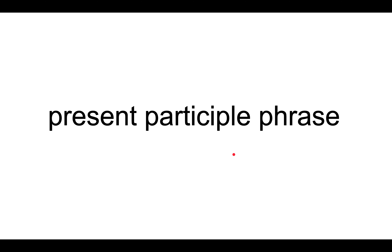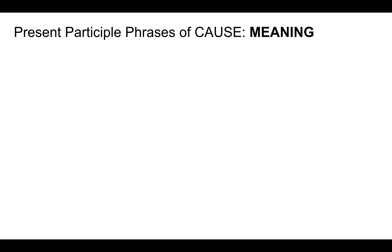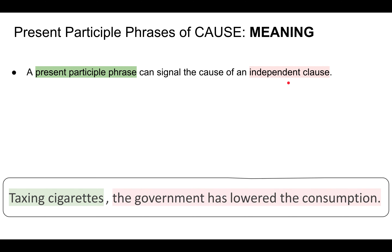I will now be presenting present participle phrases used for cause. Let's start by talking about the meaning of present participle phrases used for cause. First of all, a present participle phrase can signal the cause of an independent clause.